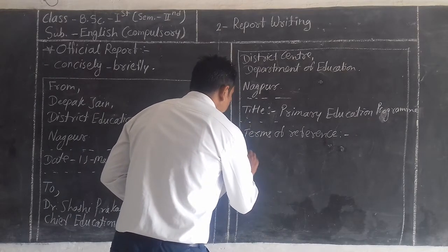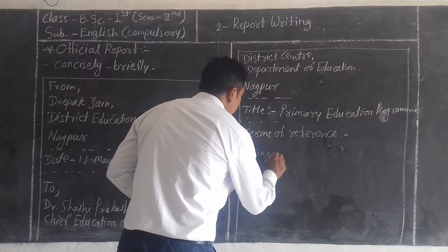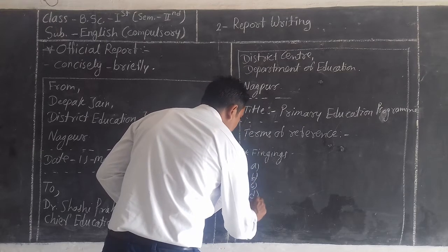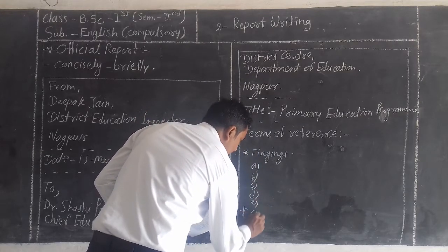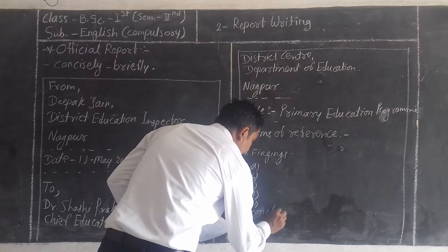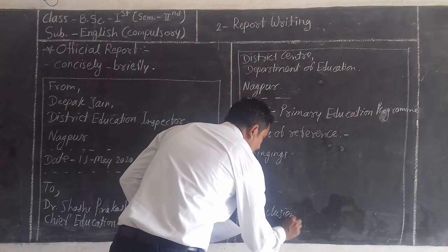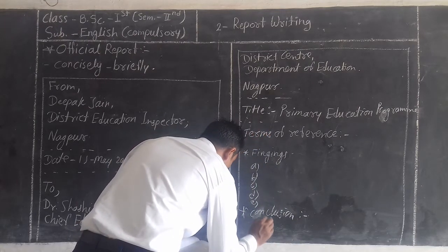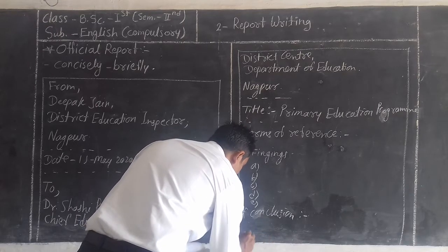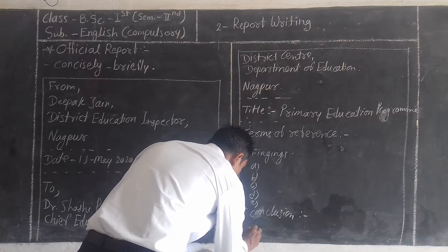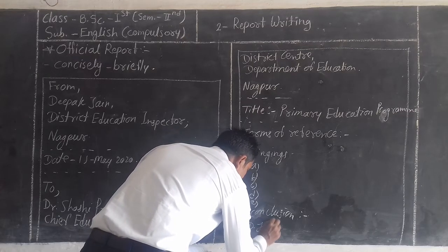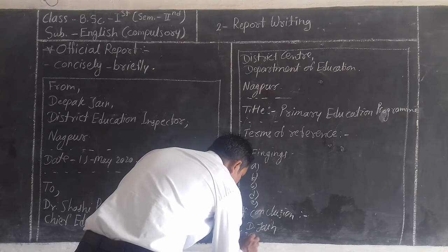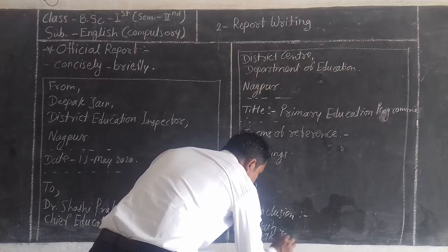After completing the findings — covering all the points — and after the conclusion or recommendation, we write the signature of that person last. For example, the person writing is Deepak Jain, so we write the initial 'D. Jain' as the signature, followed by the full name: Deepak Jain.